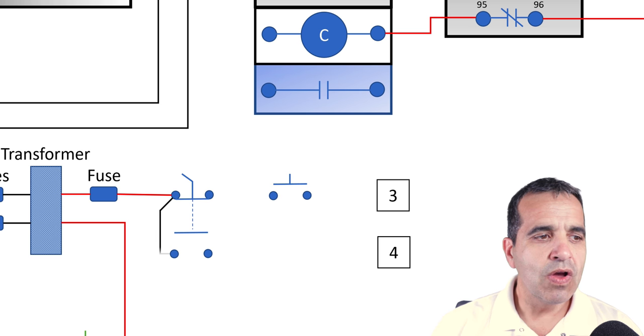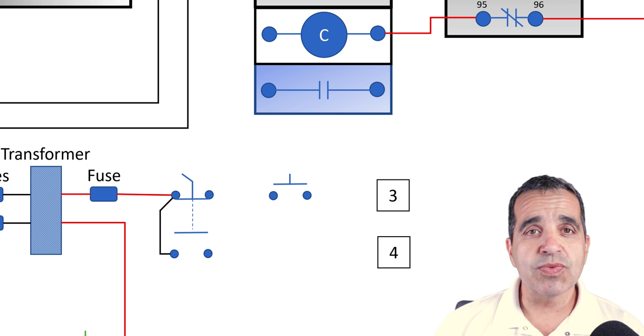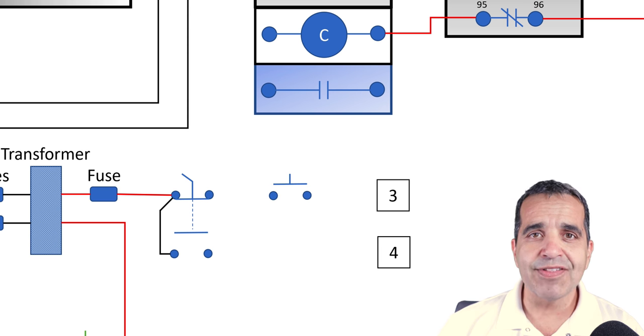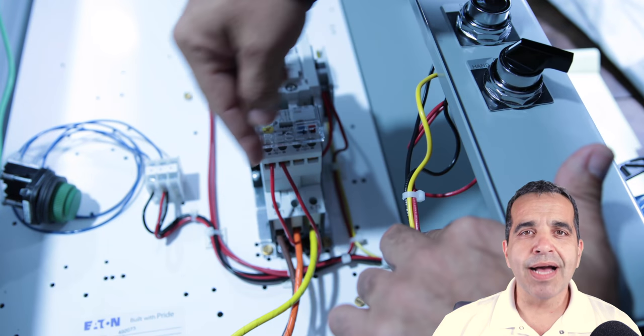From the fuse, we're feeding our selector switch. On the hot side of the selector switch, we're feeding both contacts through a little jumper. Then our selector switch feeds one side of our start button, and that start button is going to terminal block number three.